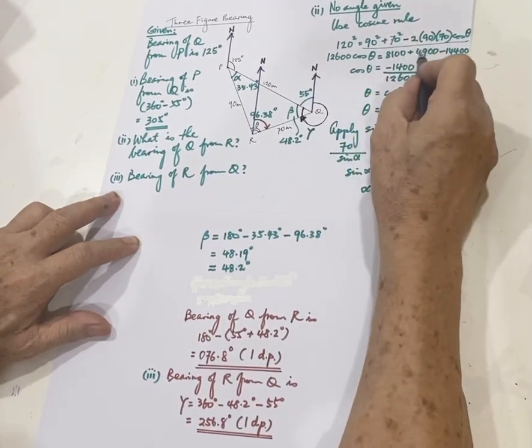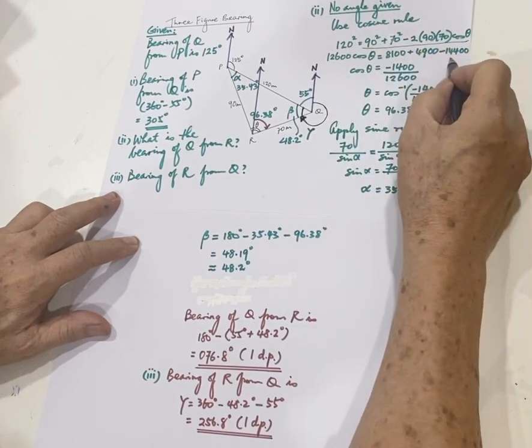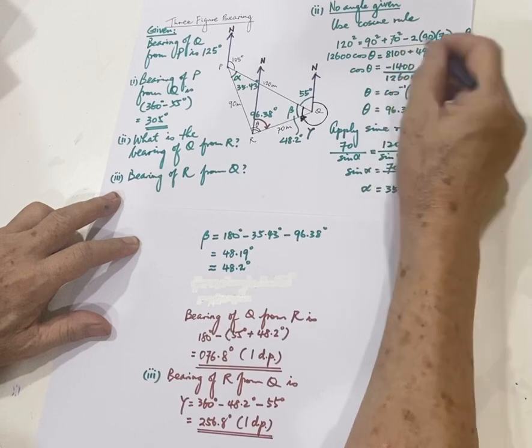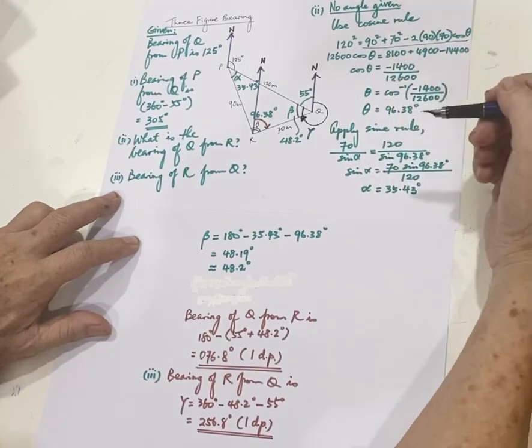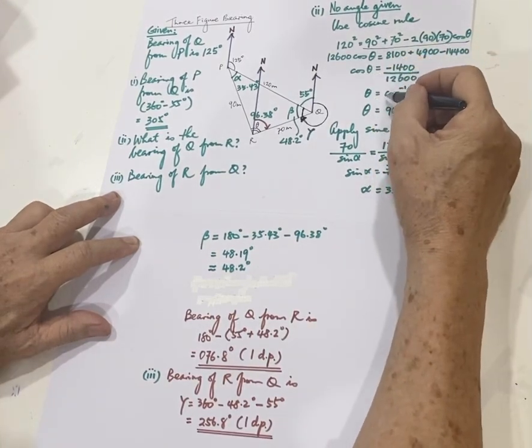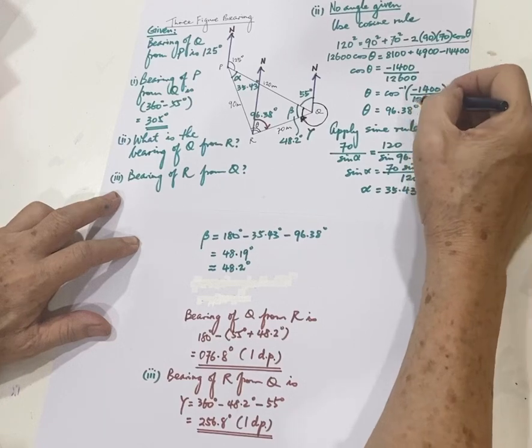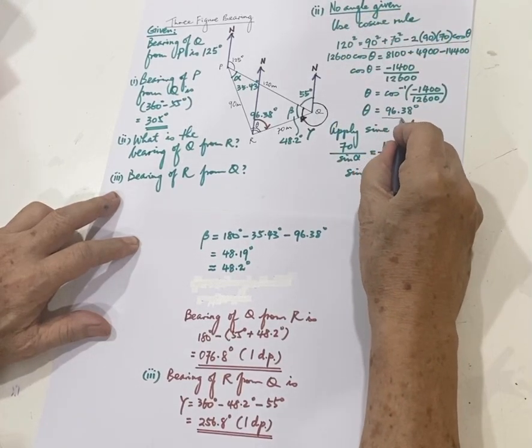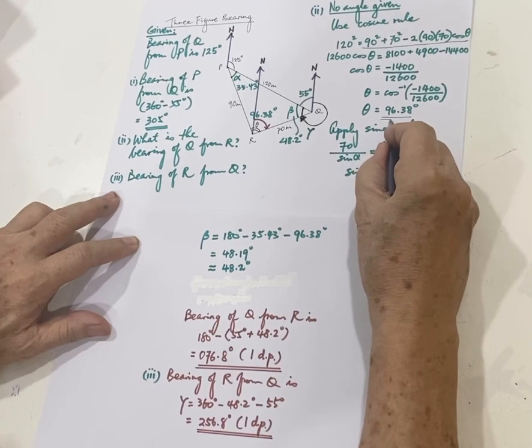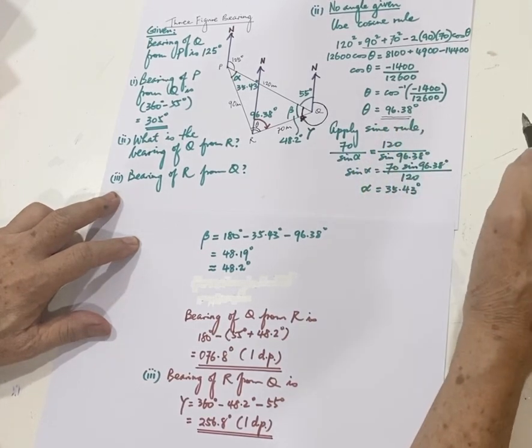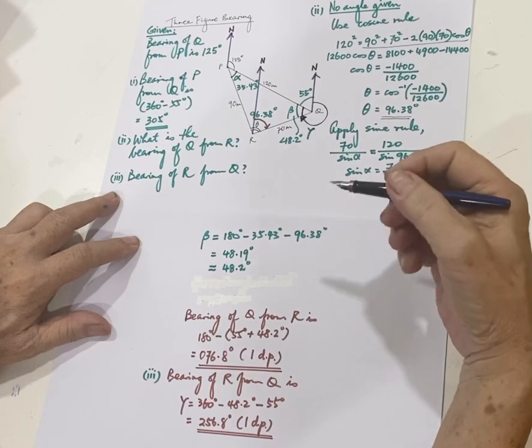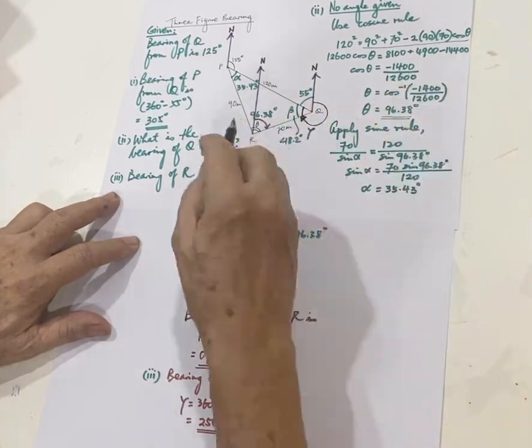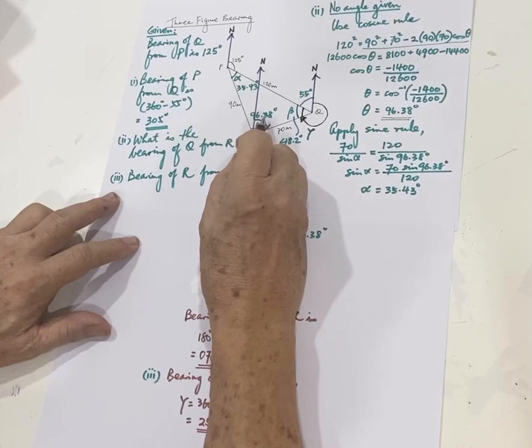So 8,001 plus 4,009 minus 14,400, you get negative cosine, only for cosine, you can press the calculator, it will give you an obtuse angle. And please keep one extra sig fig. Although IGCSE, we need one decimal point, but while we are working, we should be keeping two decimal places. So theta is 96.38 degrees.